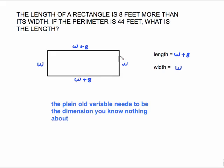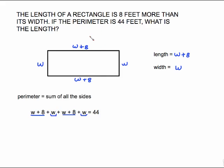Once all sides are labeled on the picture, we'll deal with what perimeter means. Perimeter means just add up all the sides. So we have the top, W plus 8, plus the right side W, plus the bottom W plus 8, plus the left side W.